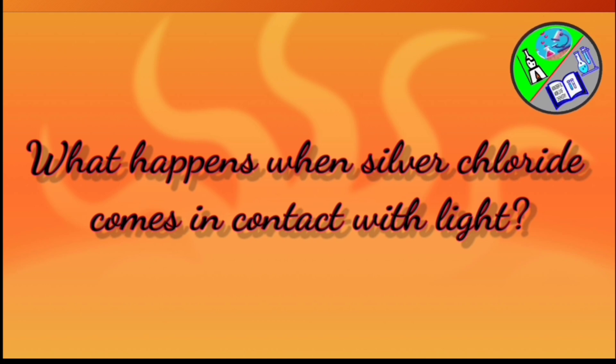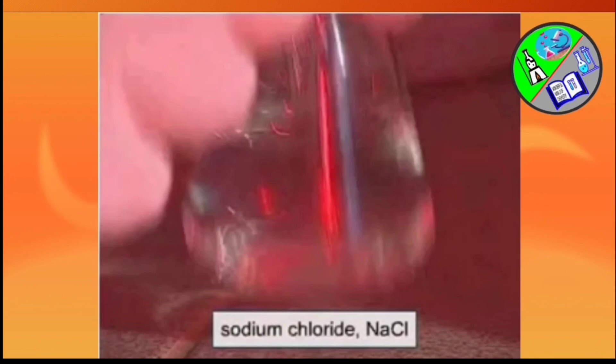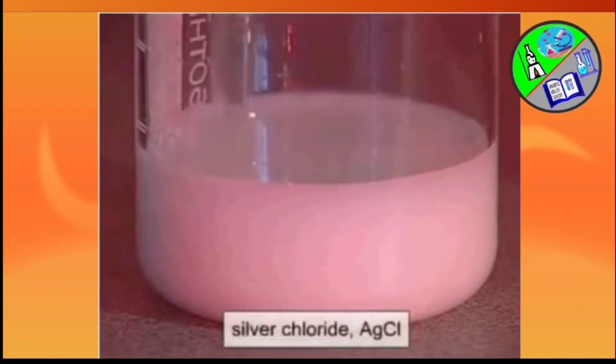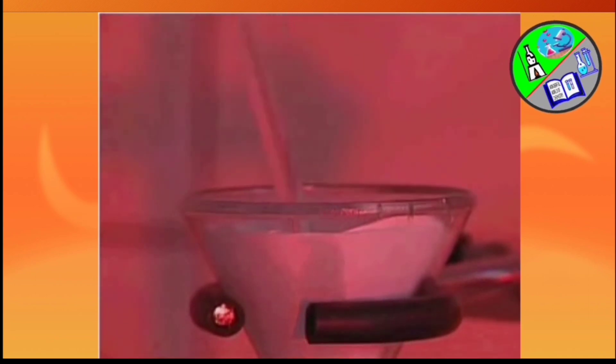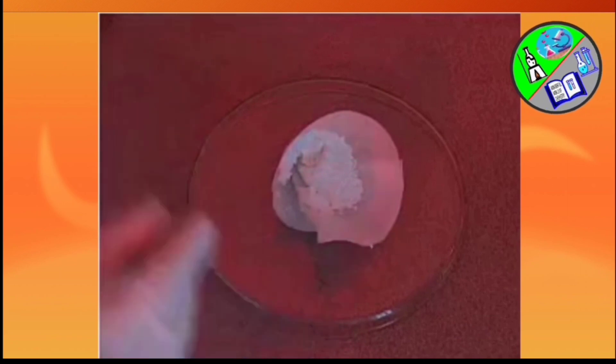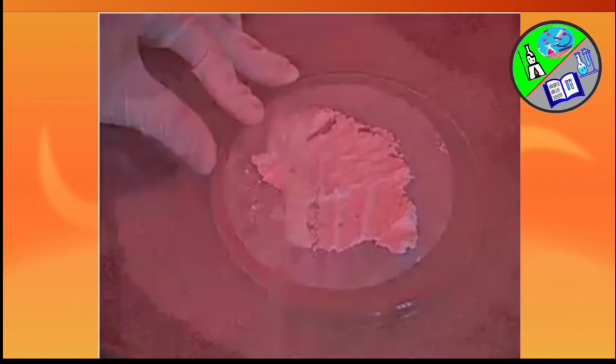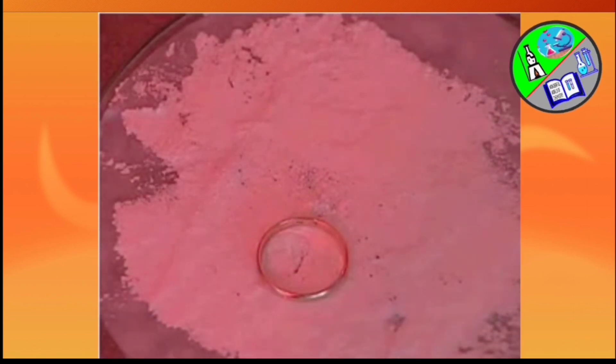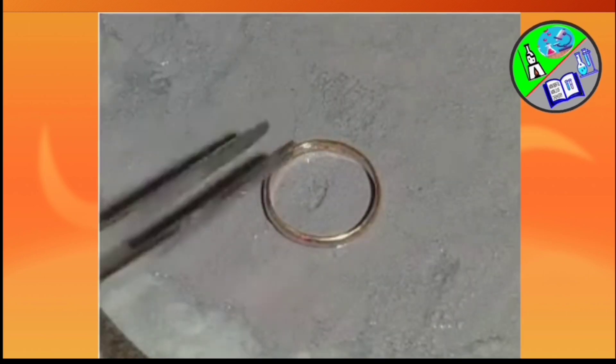What happens when silver chloride comes in contact with light? Let's see it. In this experiment first we'll mix dilute solutions of silver nitrate and sodium chloride. We can see an insoluble precipitate of silver chloride forms. Then we'll filter the mixture using the filter paper and a funnel. The precipitate is again washed with distilled water. Then the filter paper is taken out of the funnel and spread out the precipitate. After that an object is placed on the filter paper to cover a part of the substance. Light is passed through the precipitate.